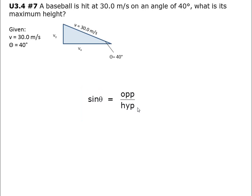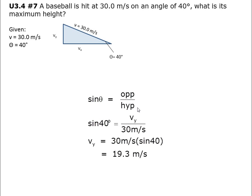Here's the diagram. Using the sine rule, we're going to figure out Vy. Sine theta equals the opposite over hypotenuse, so sine 40 equals Vy over 30 meters per second. Hence, Vy equals 30 meters per second multiplied by sine 40, which equals 19.3 meters per second.